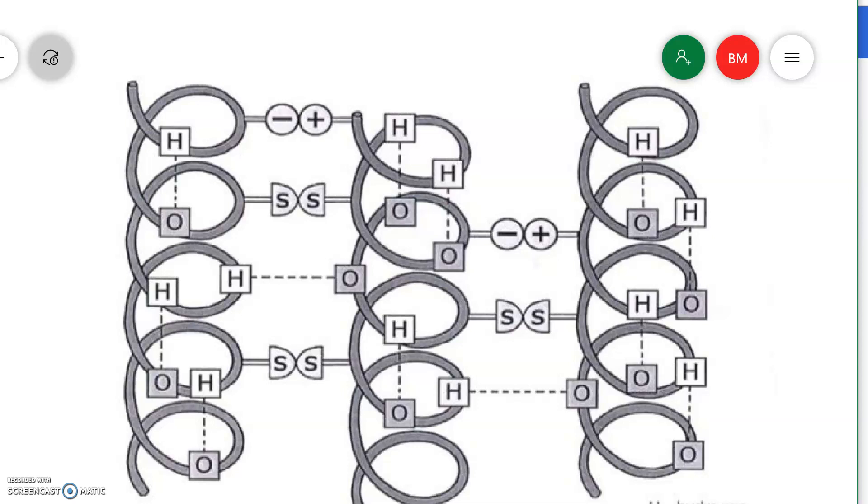The first one we see a dotted line between hydrogens and oxygens. You can guess what that's going to be. These are hydrogen bonds that are linking individual coils on this big long spiral.